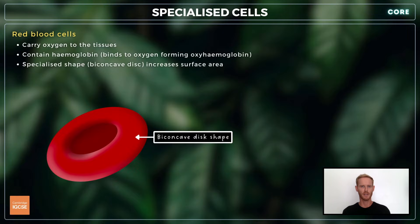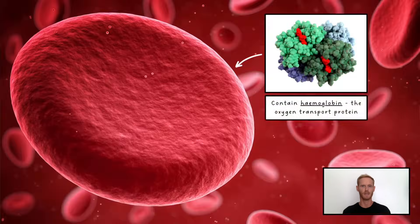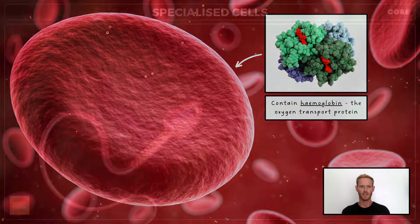Red blood cells are responsible for transporting oxygen to the body's tissues. They contain a protein called hemoglobin, which binds to oxygen forming oxyhemoglobin. They also have a specialized shape called a biconcave disc that maximizes their surface area and allows gases to be absorbed more easily.